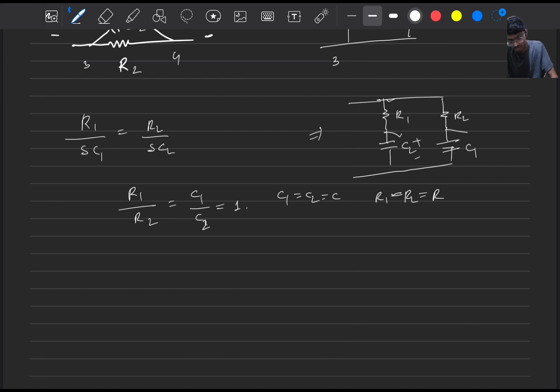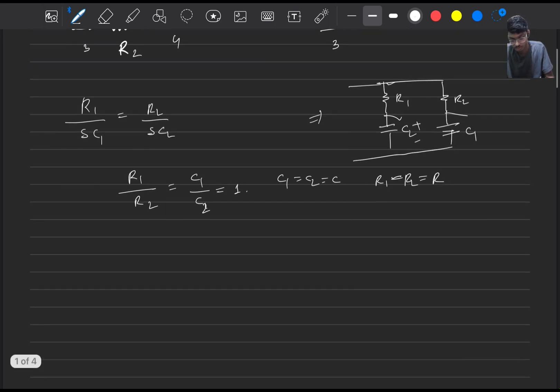So from this, C1 and C2 voltage across them will be same, so this will become dependent voltages. Hence this will become a first order circuit and the time constant for the circuit will be C1 parallel with C2, that is C1 plus C2, times R1 parallel with R2.